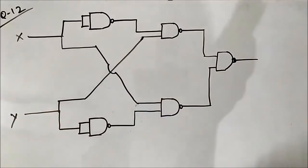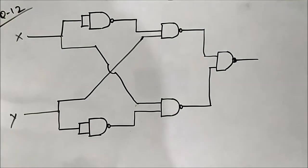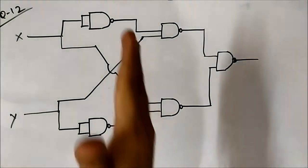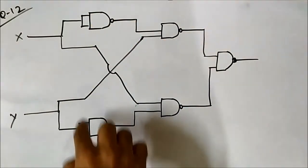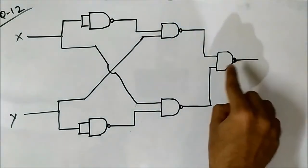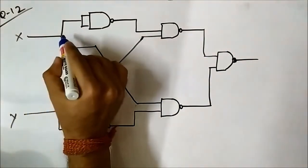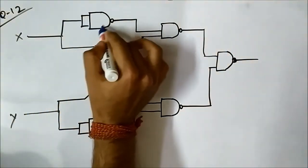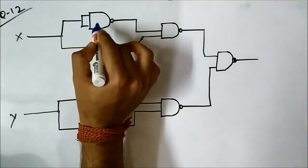This is the twelfth question. Again, this logic circuit consists of only NAND universal gates. To solve it, we divide it into three layers: the first layer consisting of two NAND gates, the second layer consisting of two NAND gates, and then the final NAND gate at the output. In the first layer, the first NAND gate has both inputs shorted to X, so it behaves as an inverter and the output is X complement.